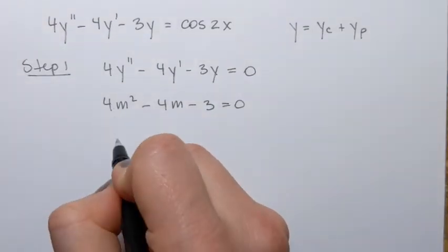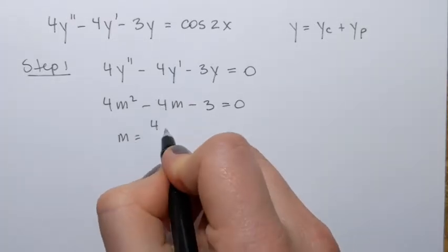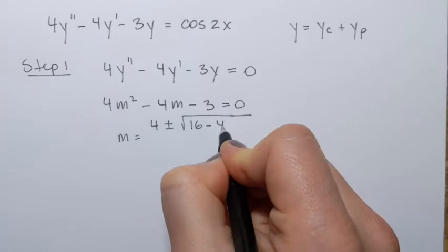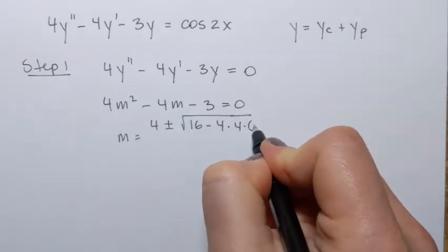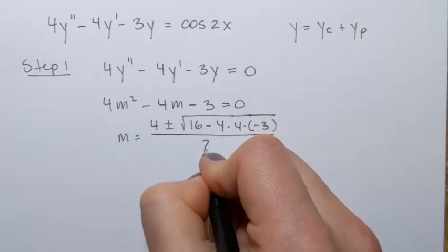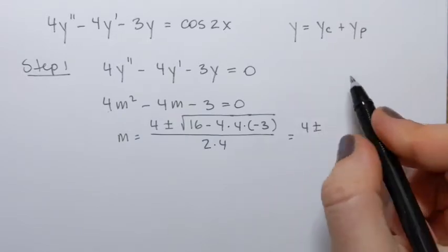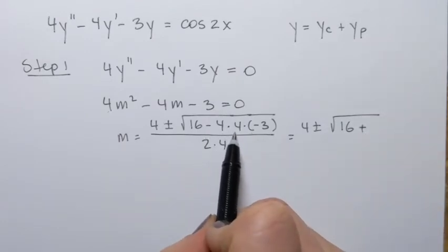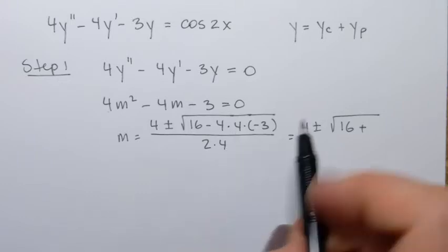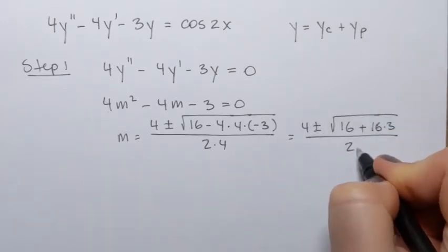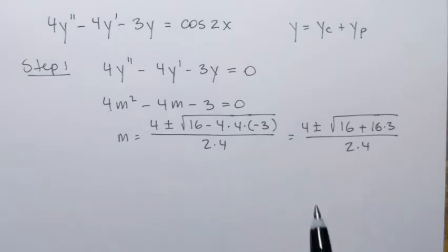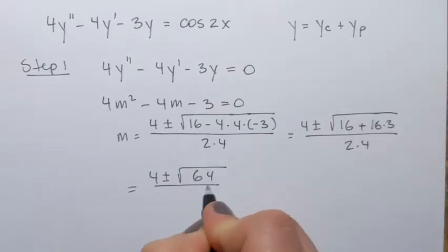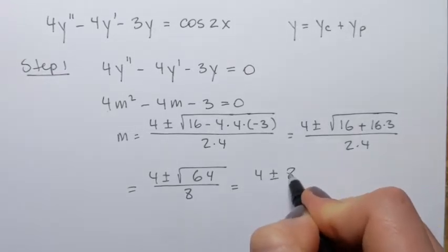To solve that, let's use the quadratic formula. To find m, we compute negative b plus or minus the square root of b² minus 4ac, divided by 2a. That gives us 4 plus or minus the square root of 16 plus 16 times 3, all over 8. That's 4 plus or minus the square root of 64 over 8, which is 4 plus or minus 8 over 8.